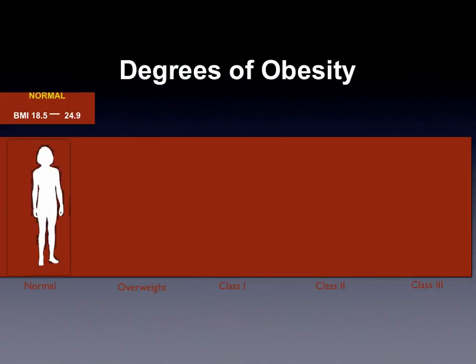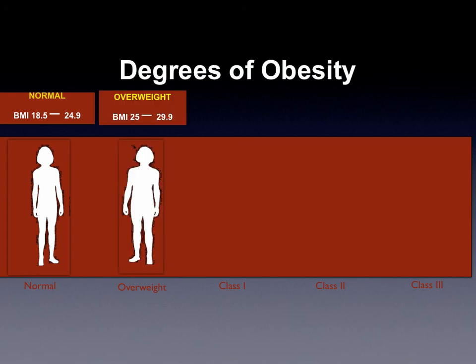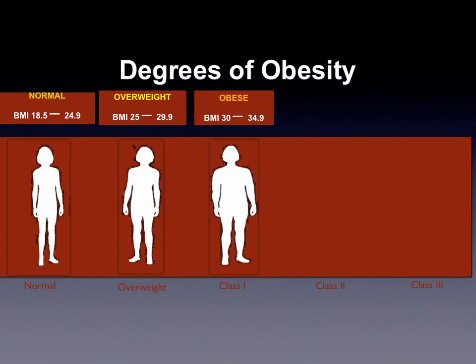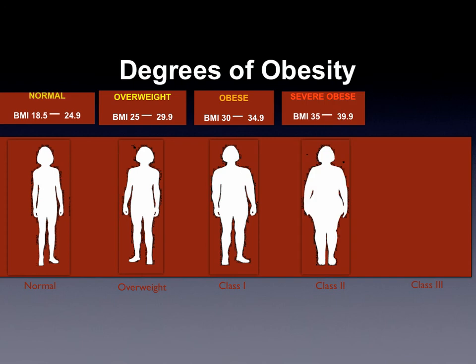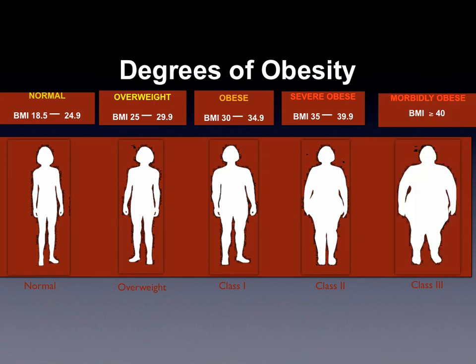So the degrees of obesity: first, we have normal weight — BMIs between 18.5 and just under 25 — and about a third of the U.S. population fits into this category. Another one-third fits into the overweight category, with a BMI between 25 and 30. Obesity begins with a BMI of 30 to 35. Class II, or severe obesity, or surgical obesity, begins at a BMI of 35 up to 40. Morbid obesity is a BMI of 40 or greater. And unfortunately, we've had to come up with a new diagnosis called super-obesity, with a BMI over 50. About one-third of the population fits into this category of obesity.